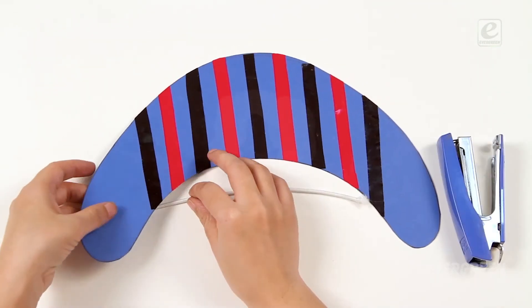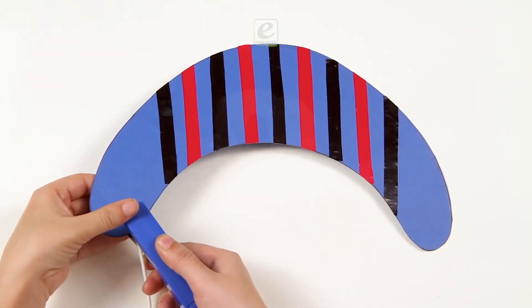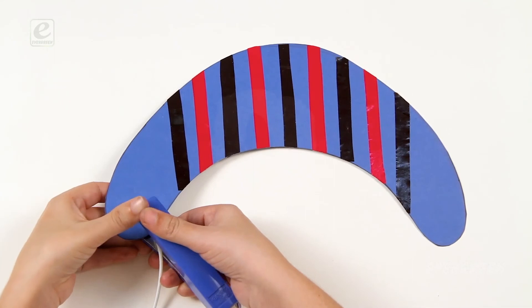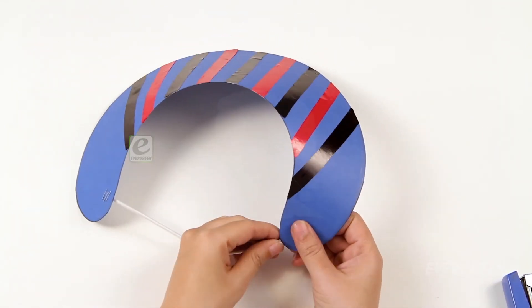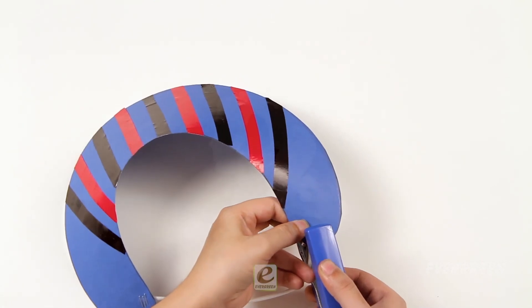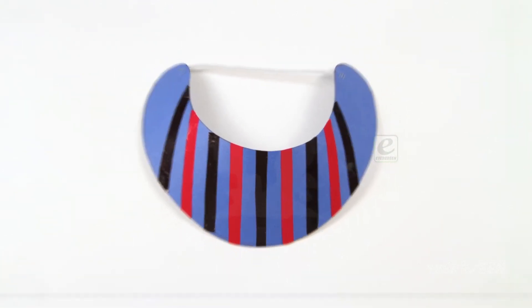Staple an elastic band on the two sides of the cap. Wow! The sun cap looks great!